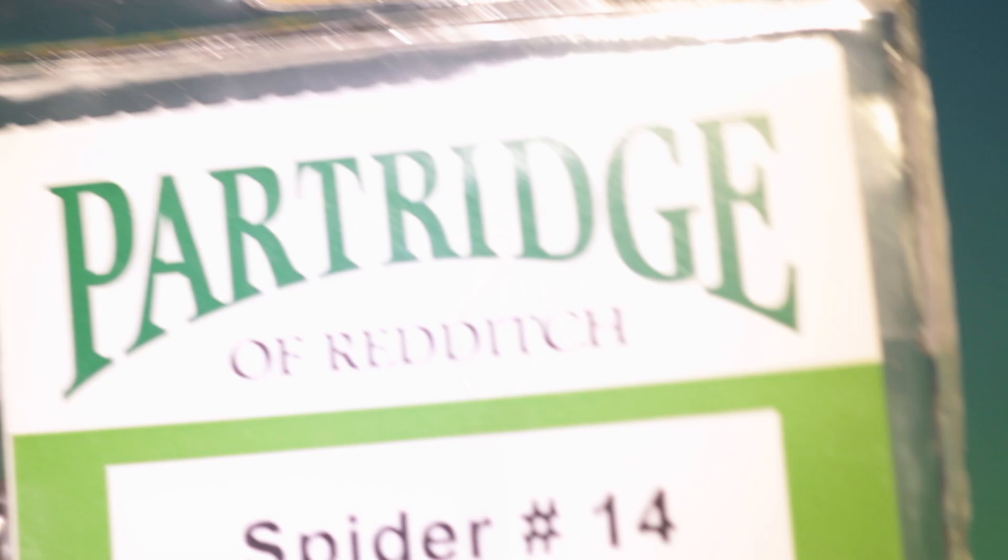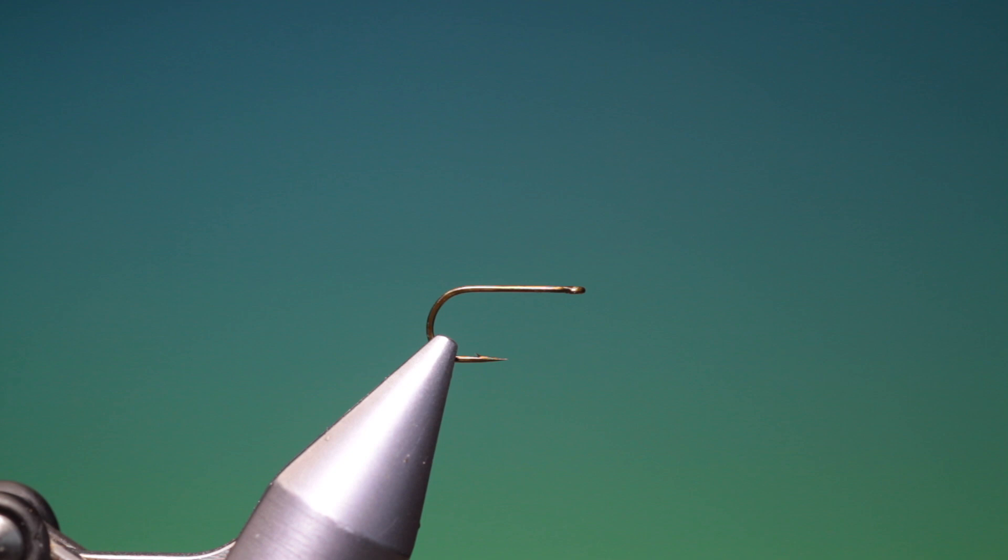Partridge Spider. We'll start with a Partridge Spider size 14, straight eye hook. I've got orange cobweb 6-0.